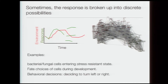There are several examples of this happening. Bacterial and fungal cells in response to starvation or stress enter stress-resistant states — initially they respond continuously, but suddenly something happens to the network, it breaks, and cells go into a different state. The second example, which I'll be focusing on today, is the fate choice of cells during development. Repeatedly during development, cells have to listen to signals, listen to their surroundings, and choose between multiple fates. Another example mentioned yesterday is behavioral decisions — how do you make decisions like turning left or right, and what are the underlying circuits?